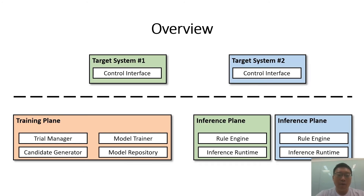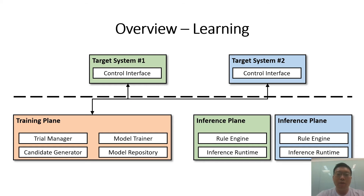Here is an overview of Autosys. It has a centralized training plan which hosts an array of machine learning tuners, and a decentralized inference plan for system-specific actuations and interactions. We are going to look at learning first and highlight components involved.